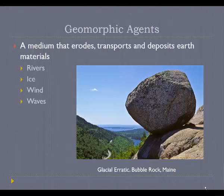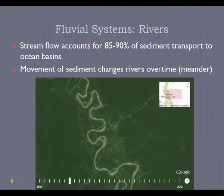Geomorphic agents are defined as a medium that erodes, transports, and deposits earth materials. These include things like rivers, ice, wind, and waves — most associated with some sort of water or air fluid. Here's a picture of a boulder sitting in a precarious position on the edge of a cliff. This boulder is an example of a glacial erratic — a rock left behind as a big glacier melted, carrying the rock into this position.